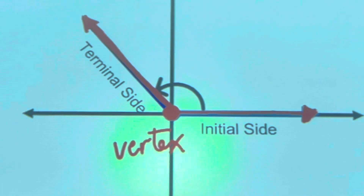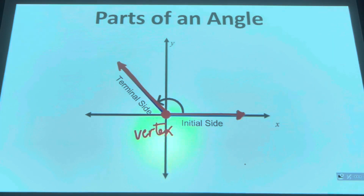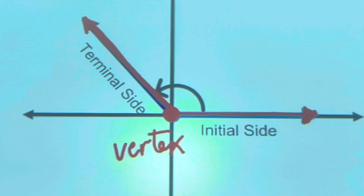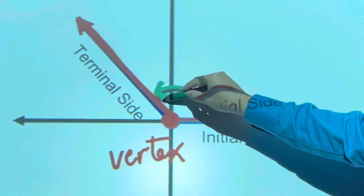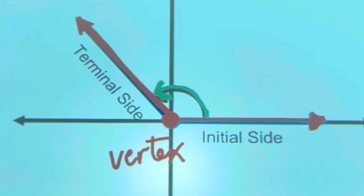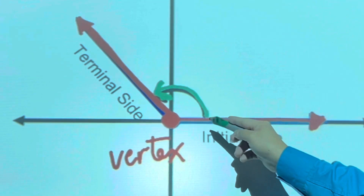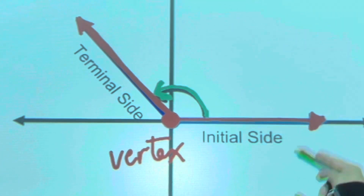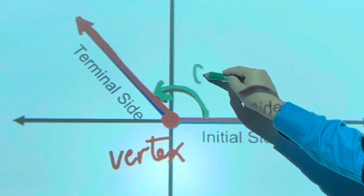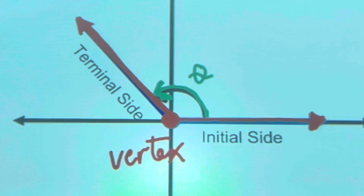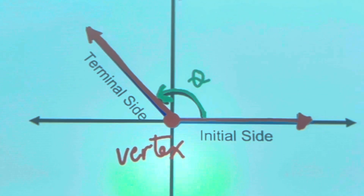You will know the direction of the angle depending on the arrow that you draw. As you can see, there's an arrow here, which means the angle is moving in a counterclockwise direction. And we can put here the name of the angle — theta, for example. So those are the three important parts: terminal side, initial side, and the vertex.